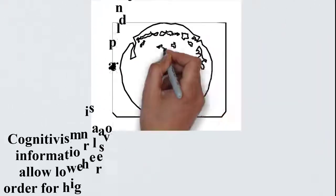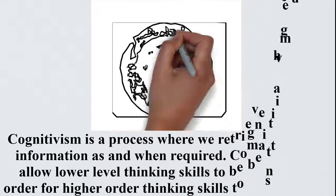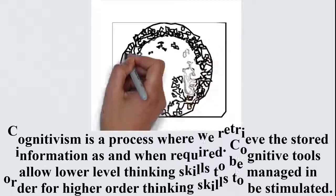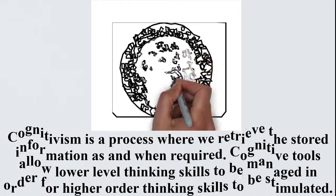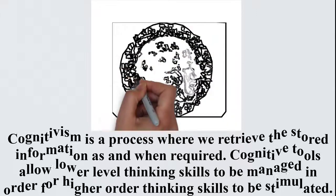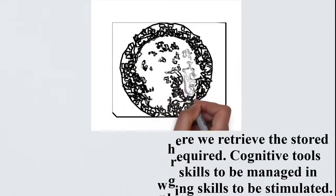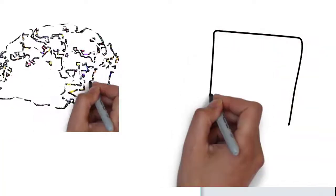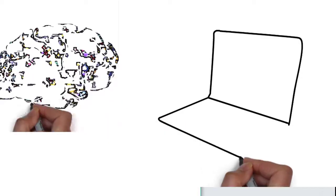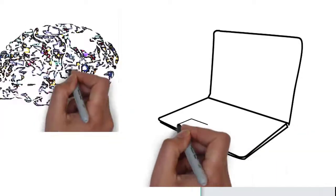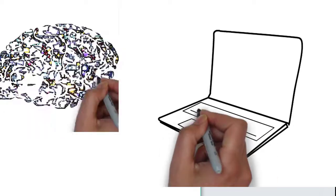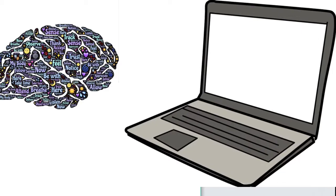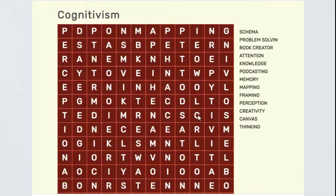Cognitivism is a process where we retrieve stored information as and when required. Cognitive tools allow lower-level thinking skills to be managed in order for higher-order thinking skills to be stimulated. The relationship of technology integration and cognitivism involves the use of technology that helps learners gain mental and cognitive knowledge as a way of improving their studies. For example, a crossword puzzle.